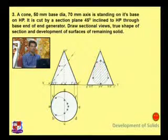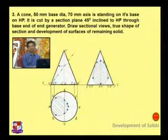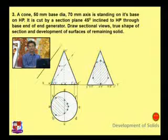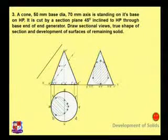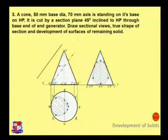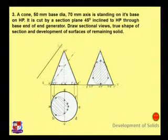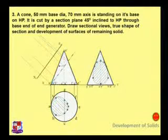Draw section lines because this is a sectional side view, and this is the sectional top view of the given cone. After drawing these two views, we have to draw the true shape. Using the previous analogy, draw a cutting plane line parallel to the original cutting plane line — these two lines are parallel to each other. Then draw vertical lines from all these points.